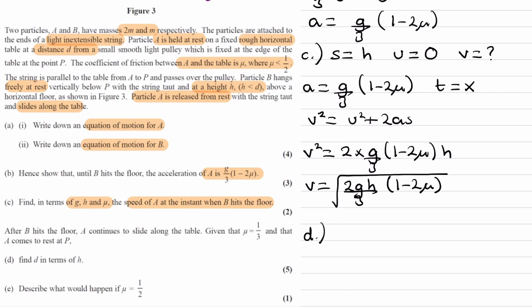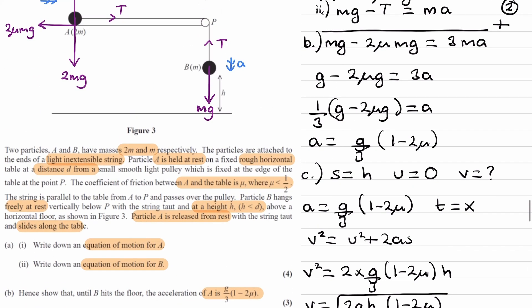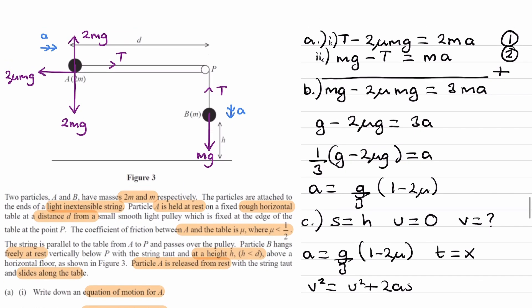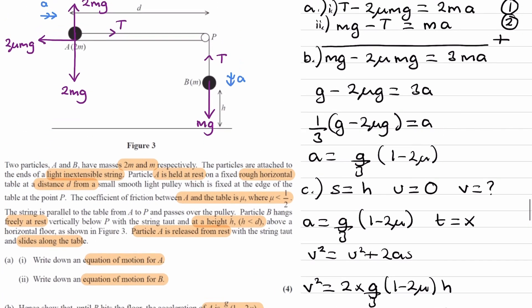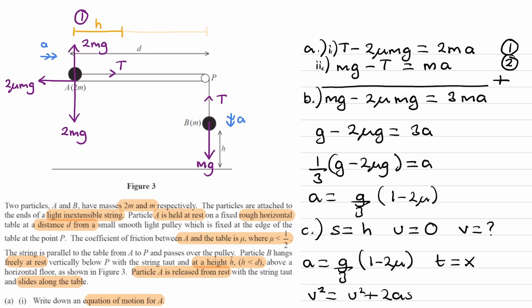For part D: after B hits the floor, A continues to slide along the table. Given that μ equals one third and A comes to rest at P, find d in terms of h. We split the motion into two stages. Stage 1: B falls distance h to the floor, while A travels distance h to the right. Stage 2: after B hits the floor, A travels the remaining distance d minus h to reach point P, where it just comes to rest. The final speed of stage 1 becomes the initial speed of stage 2.